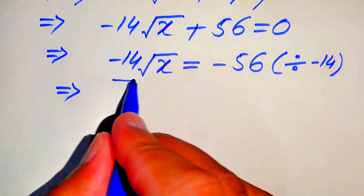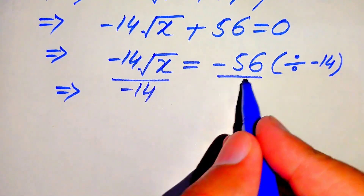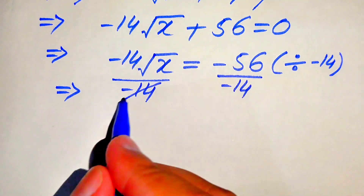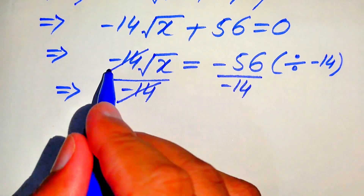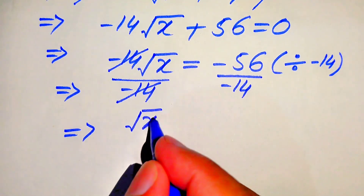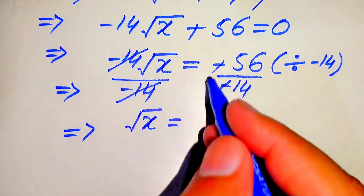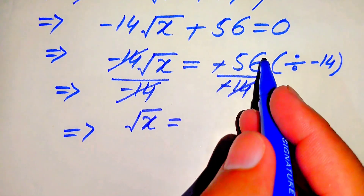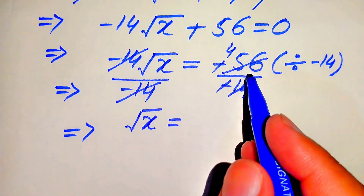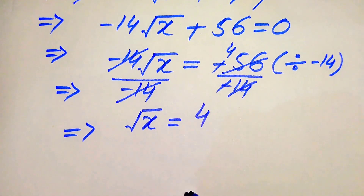When we divide each of these terms by minus 14, it will be written as minus 56 divided by minus 14. This minus 14 and this minus 14 are gone, and on the left hand side we get square root of x. The minus and minus are gone and we get 56 divided by 14 equals 4. So here we get only 4, meaning square root of x equals 4.